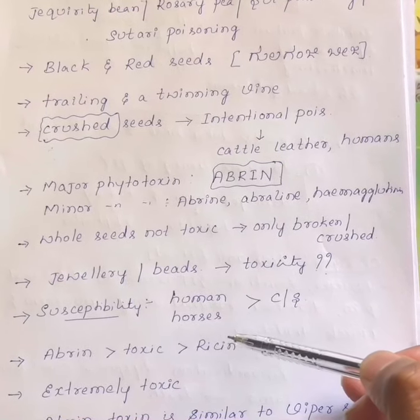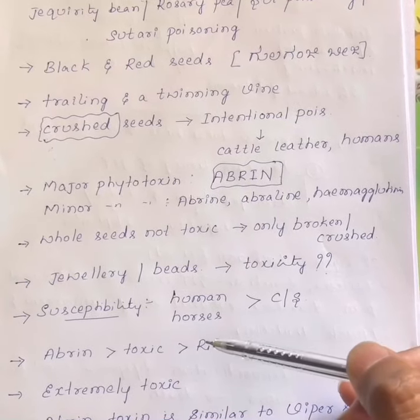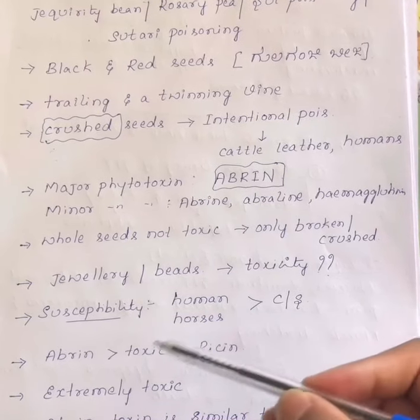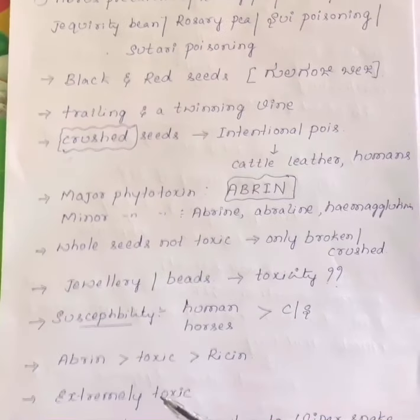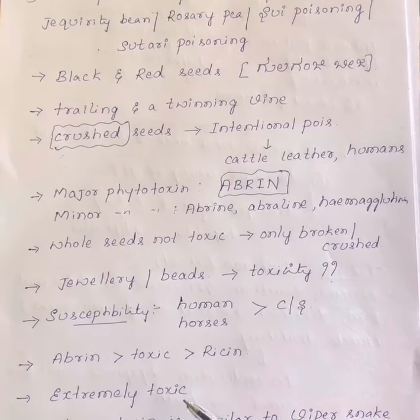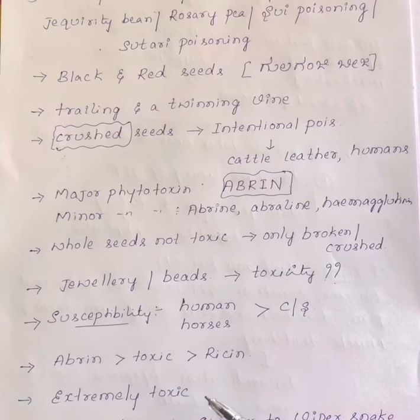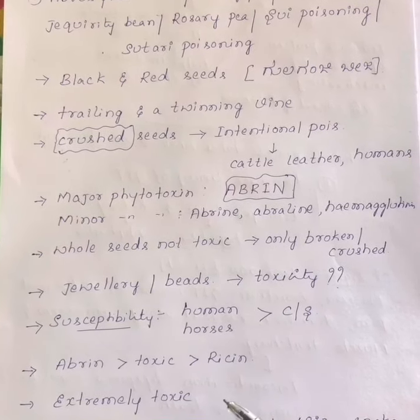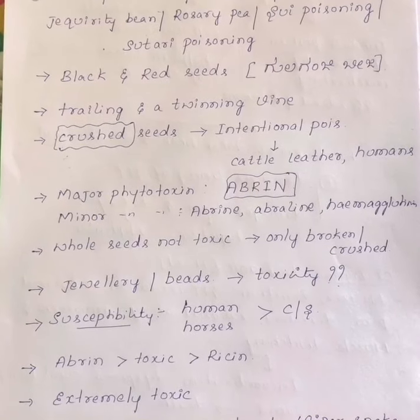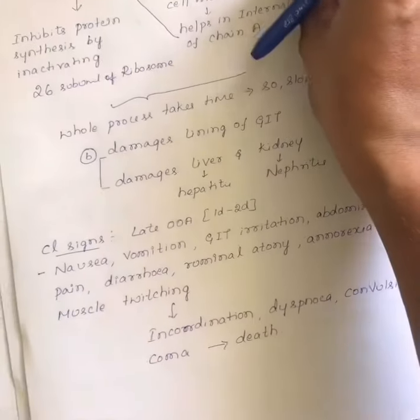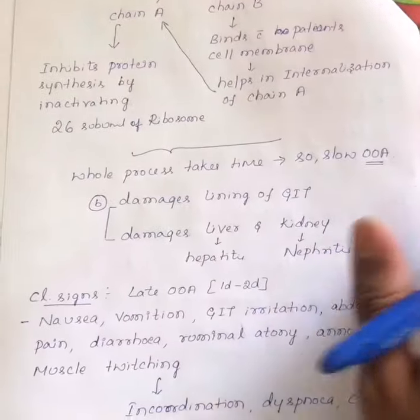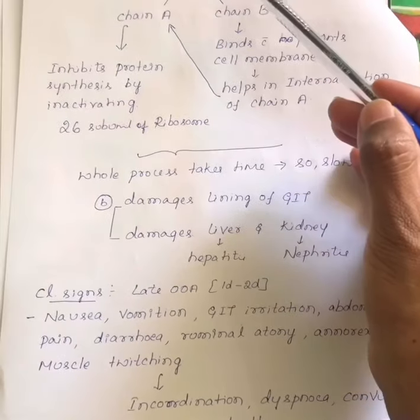Abrin is the phytotoxin of Abrus precatorius, and ricin is the phytotoxin of castor bean — both are lectins. When comparing the two, abrin is more toxic than ricin. Abrin is extremely toxic: its LD50 value is less than one milligram per kilogram body weight, which is enough to kill 50% of animals. Abrin toxicity is very much similar to viper snake venom.